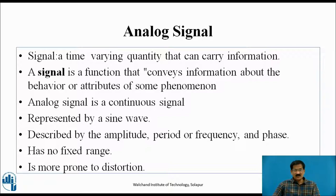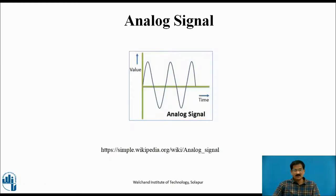Analog signal has no fixed range and is more prone to distortion. Here is the waveform of the analog signal — a sinusoidal alternating quantity with a maximum value of plus 5 volts and a negative maximum of minus 5 volts. This means the analog signal will have values ranging from 0 to 5 volts, for example 0.1 volt, 0.2 volt, 0.3 volts, 4.99 volts, and 5 volts — an example of a continuous signal.